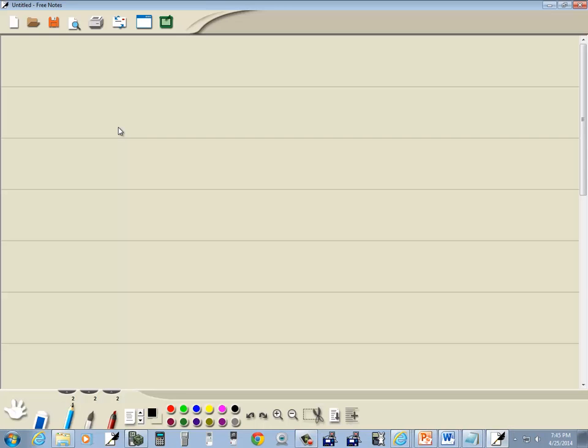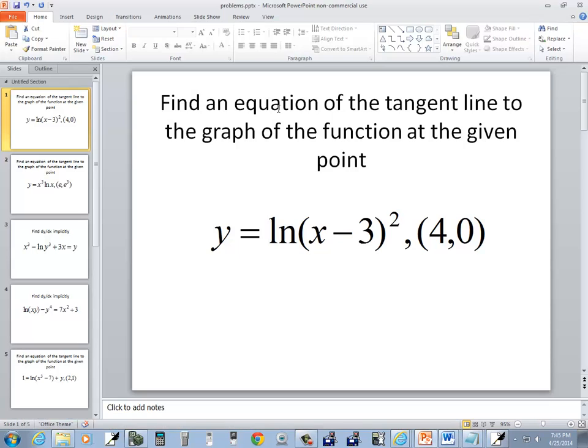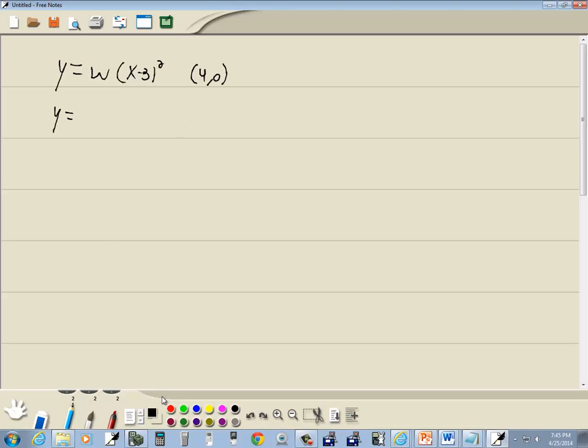Let's take a look at this problem. We've got y equals natural log of x minus 3 squared at (4,0). Now I want to find the equation of the tangent line, so our first step is to find our derivative. But before we do that, let's take that 2 and put it out in front of the log. Use our properties of logs to make it a little bit easier.